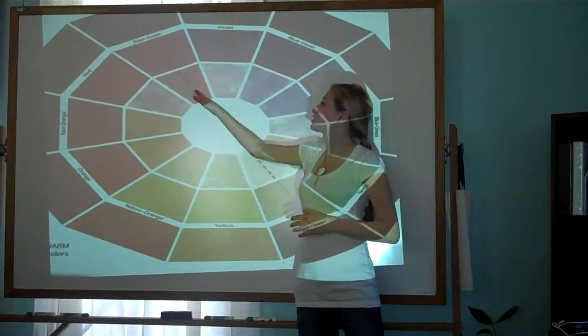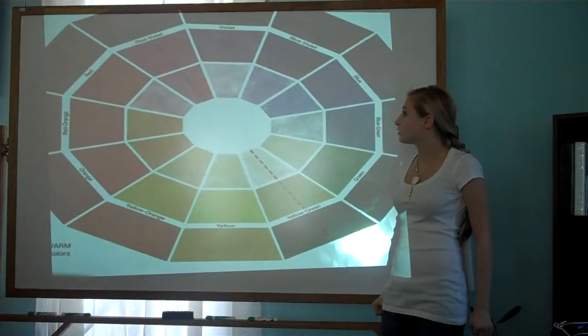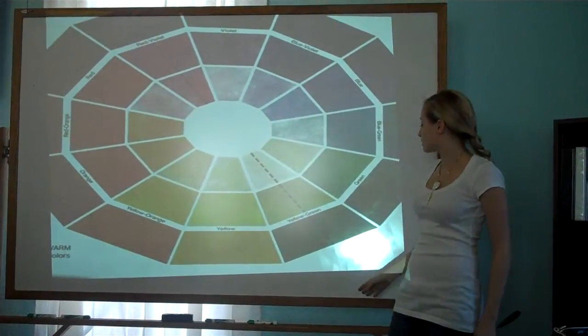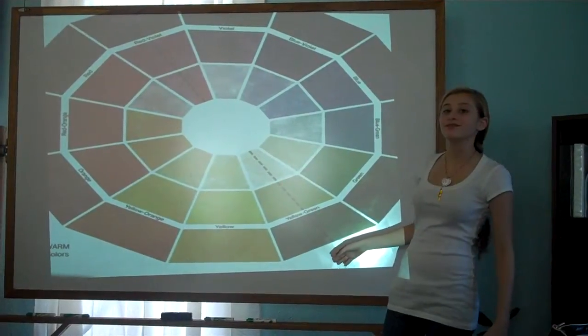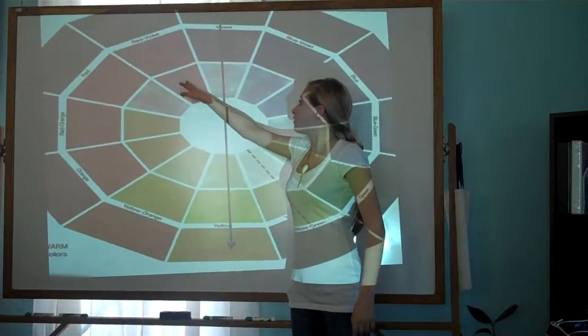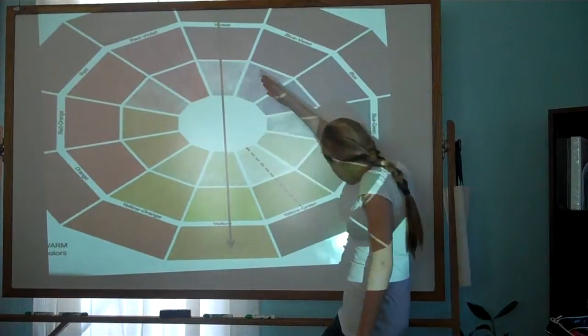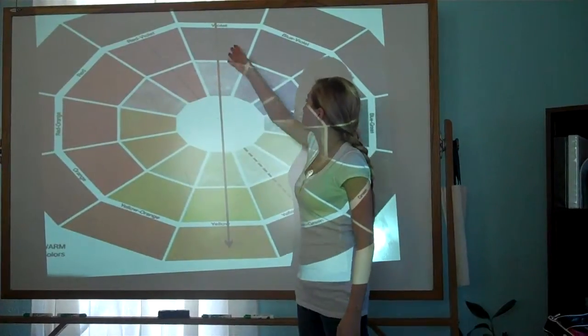Colors that are opposite each other are called complementary and contrasting colors. For example, purple and yellow, and also orange and purple.